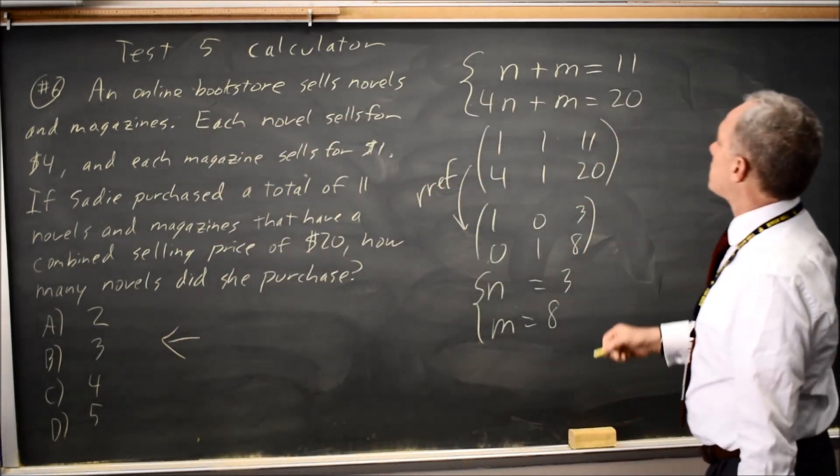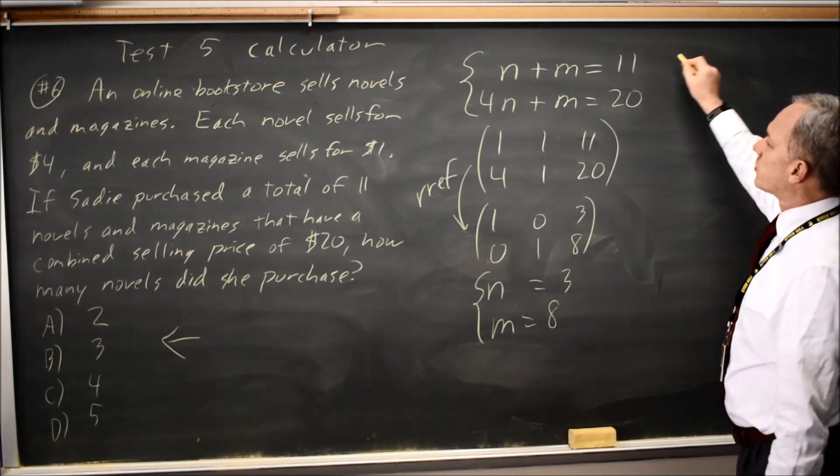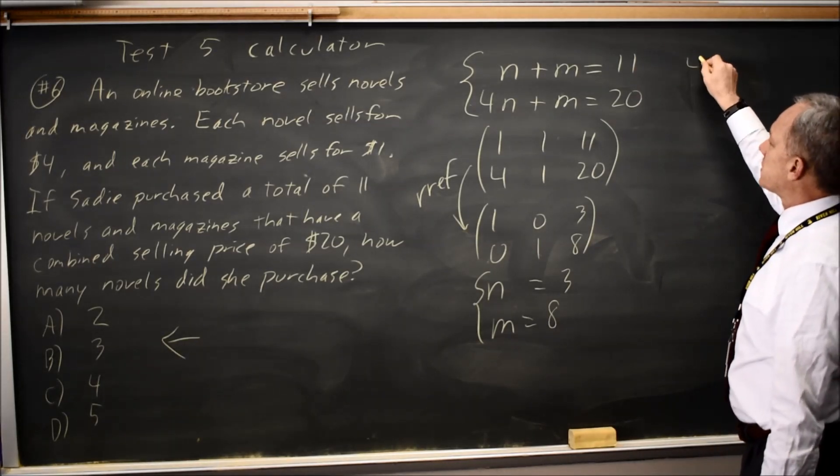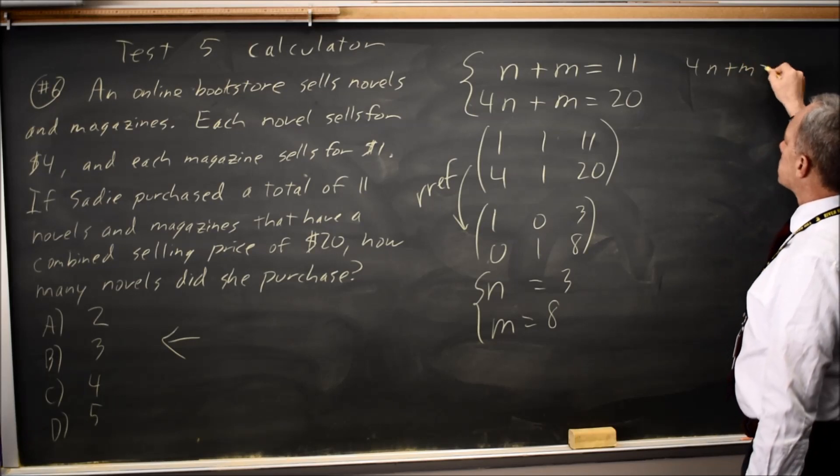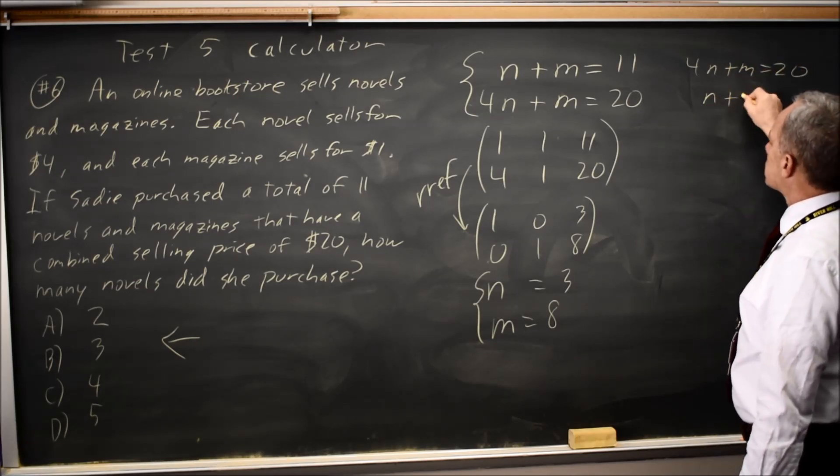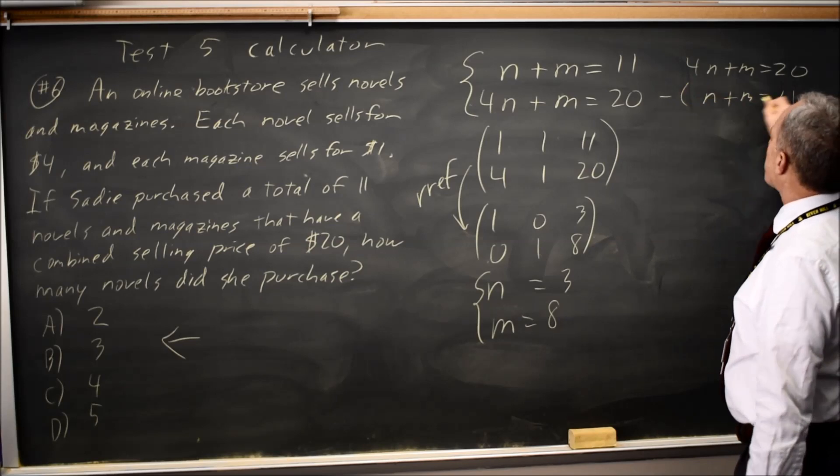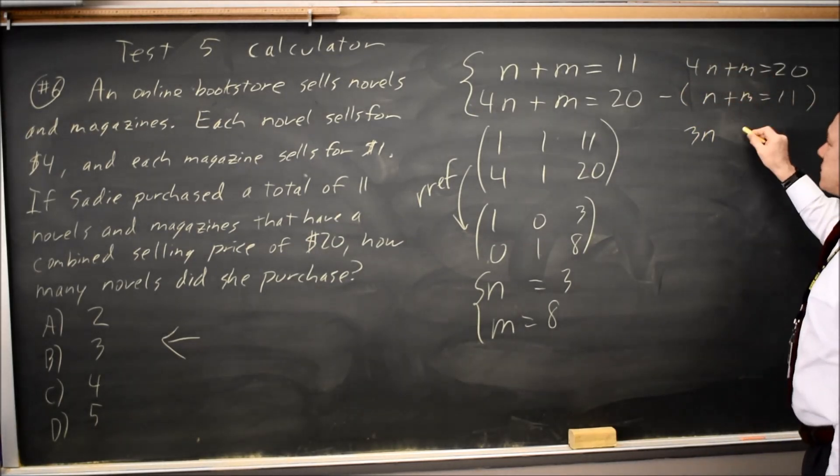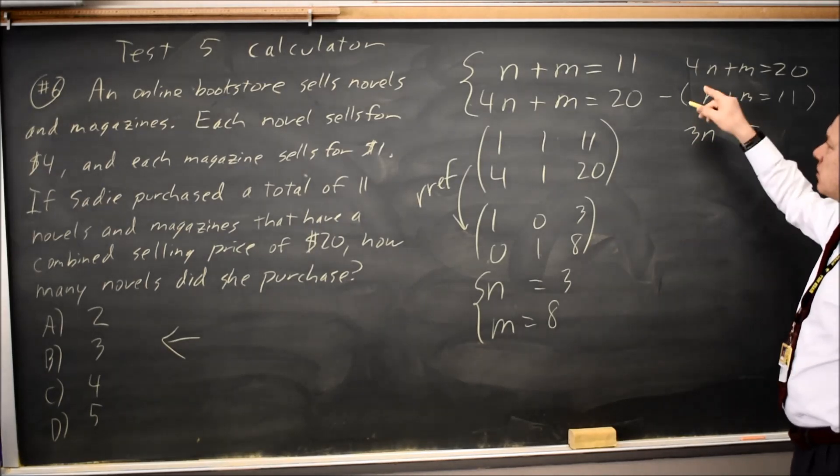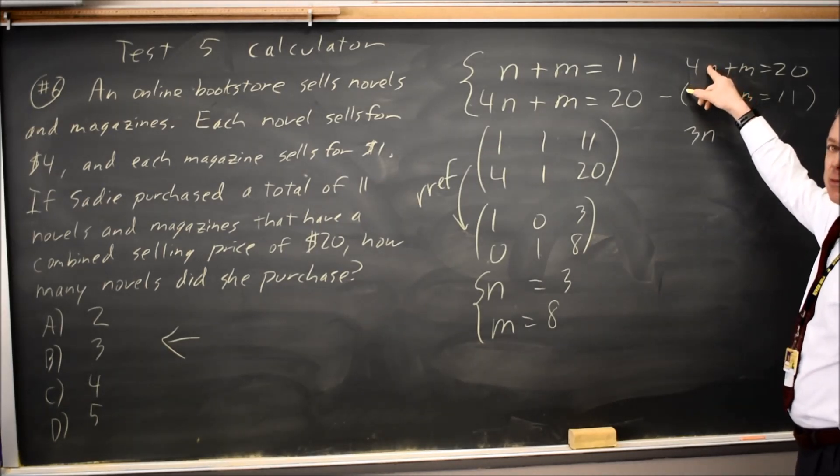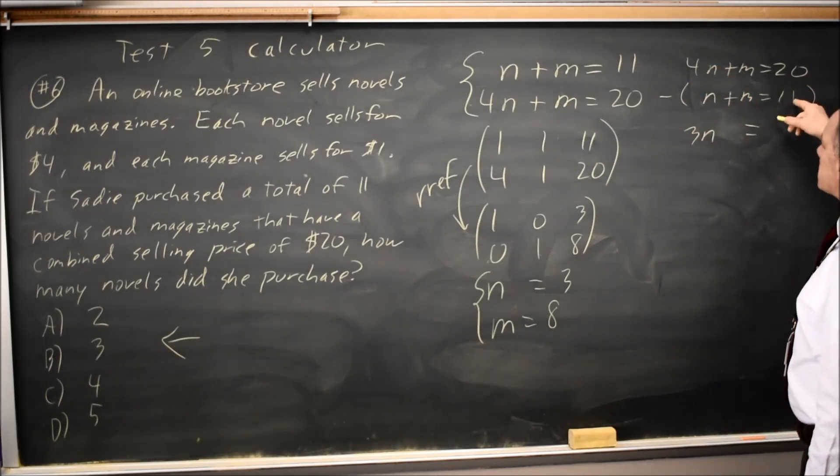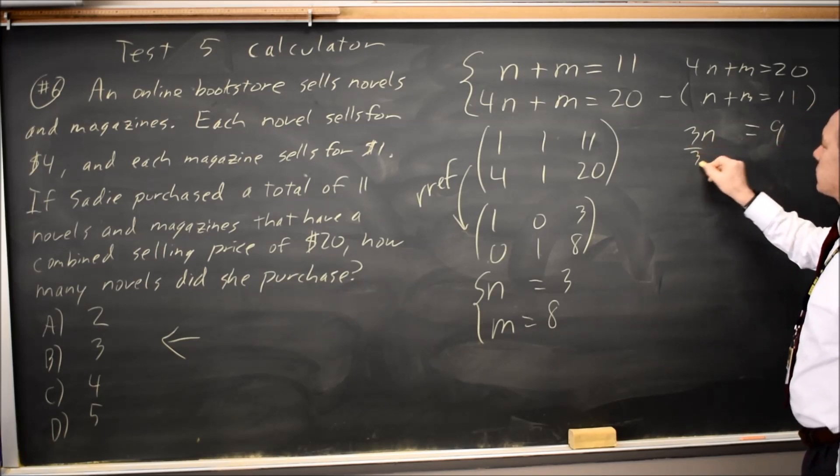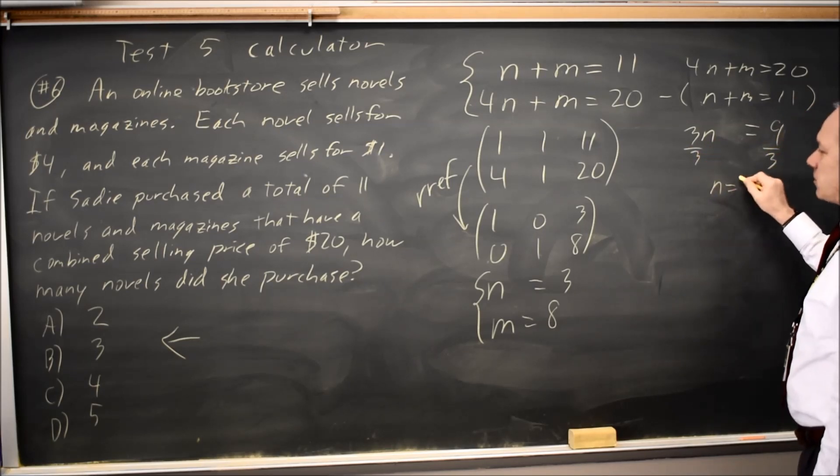I could also have solved this by subtracting the first equation from the second. Four n minus n is three n. m minus m is zero m. That's why I subtracted one times this equation from this and eliminates the variable m. Twenty minus eleven is nine. n equals three.